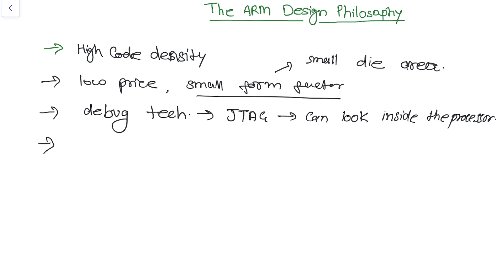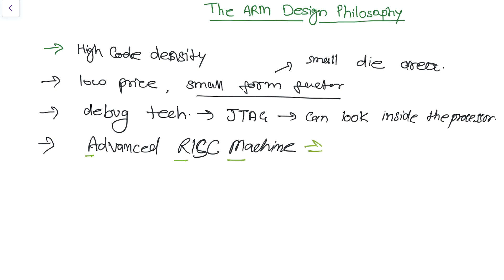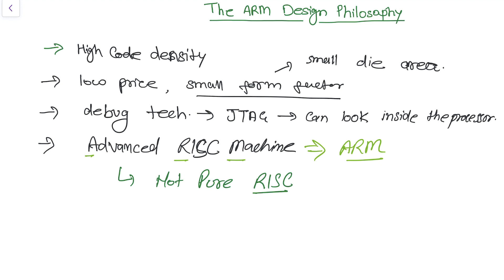Another feature is that ARM stands for Advanced RISC Machine. So A-R-M tells us this is an Advanced RISC Machine. However, this is not a pure RISC machine — it is a little different from RISC. There are many ways in which it differs from traditional RISC machines, and we are going to discuss those. The first topic is the instruction set for embedded systems.